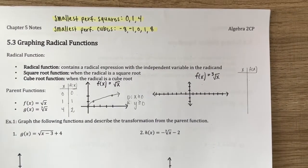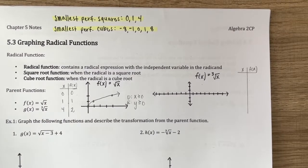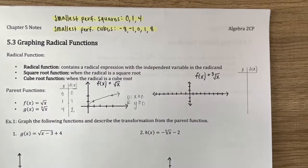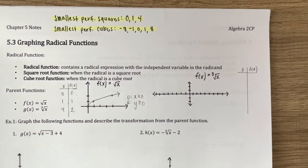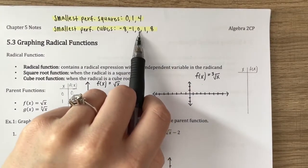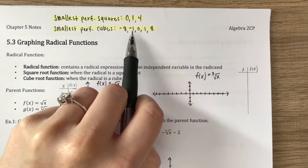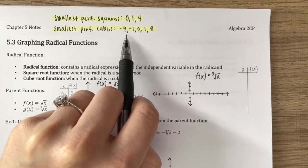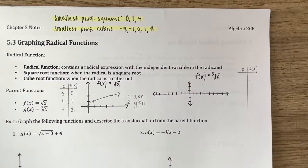For the cube root of x — f(x) equals the cube root of x — we have to include more points in our table because you can take the cube root of a negative number. So for a cube root, you want five points. We focus on the smallest perfect cubes: we can take the cube root of 0, of 1 and negative 1, and of 8 and negative 8.